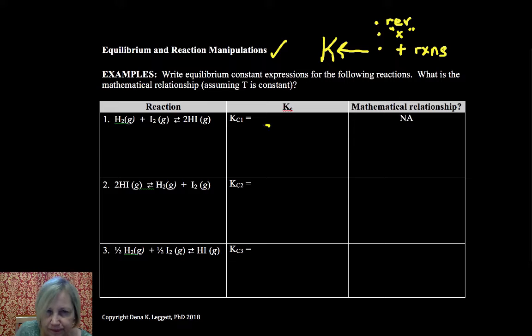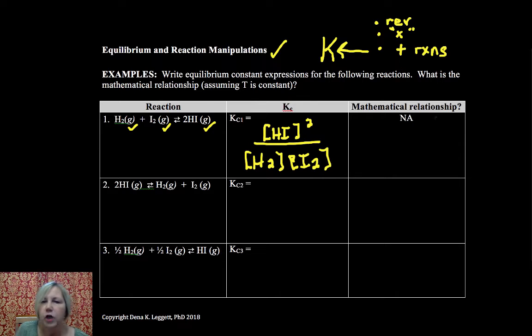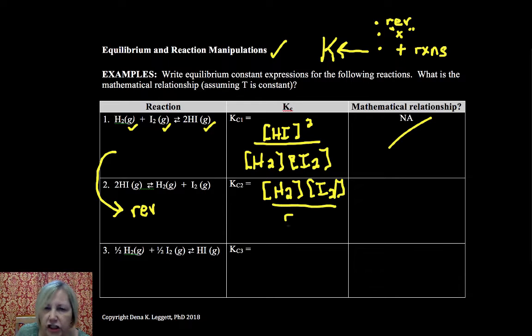So let's look at this first one. This is HI squared, these are all gases. You always want to check your states to make sure you include them all, over H2 times I2. Now let's see what happens when we take that reaction and we reverse the reaction. In this case I now have H2 times I2 over HI squared.